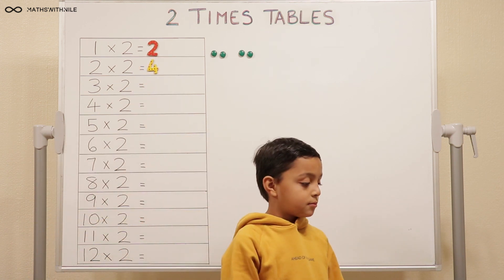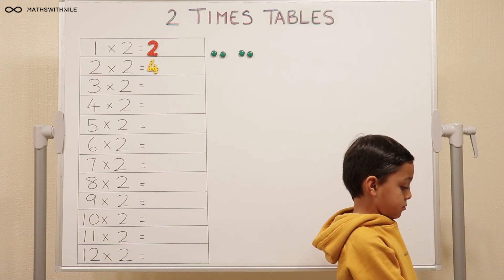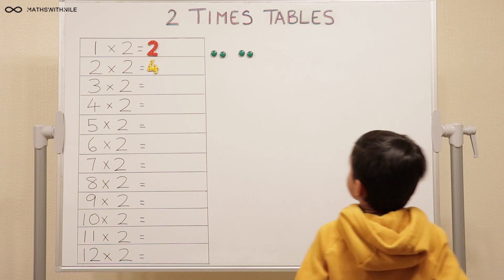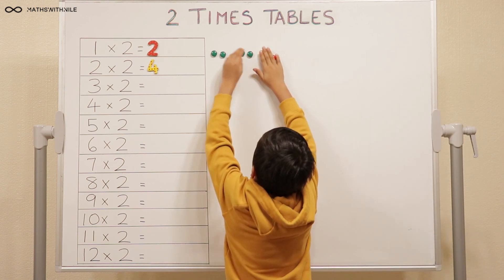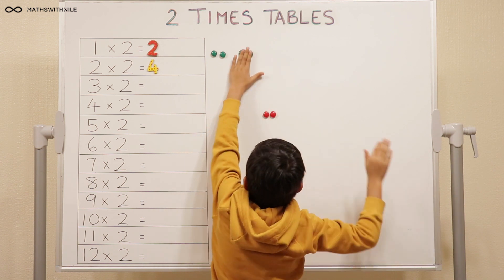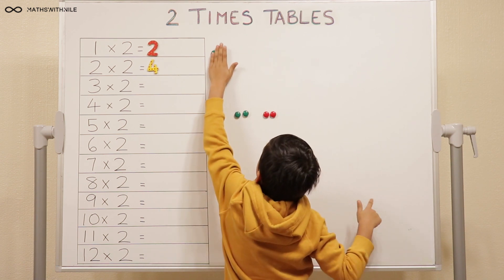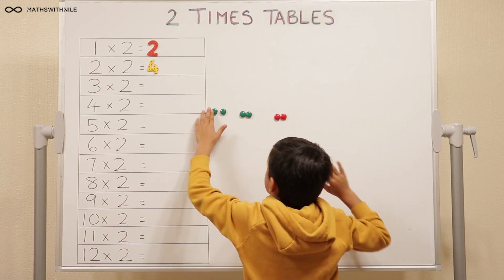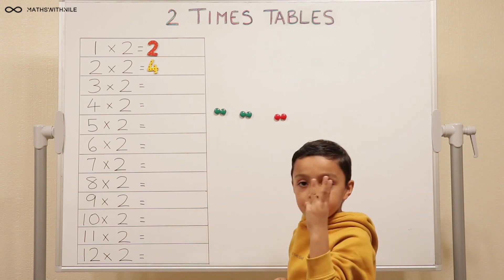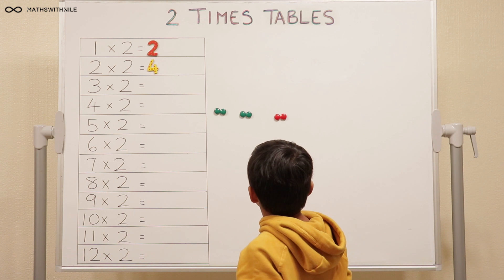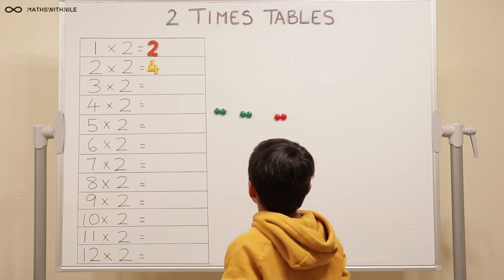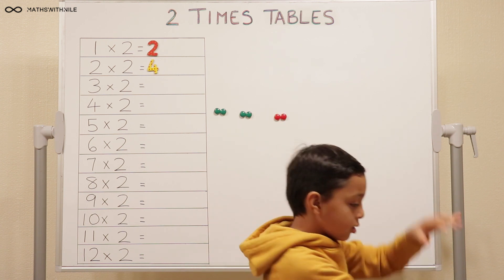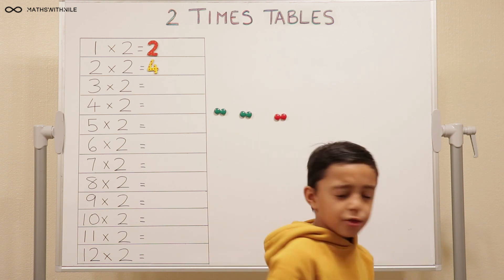Now, using the counters, can you do three times two? Okay, so here's our third lot of twos — I'll just bring them down so it's easier to reach. How many lots of twos do you have? Three lots of twos, which is the same as three times two. So how many do you have in total? Two, four, six. Very good. So three times two is six.